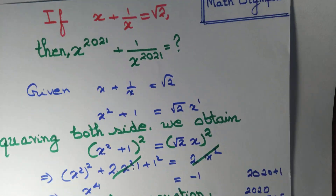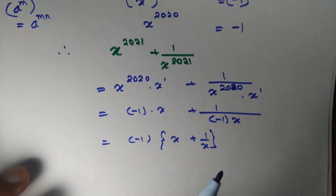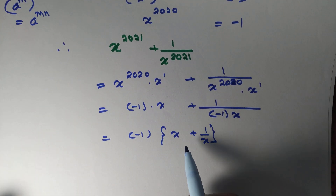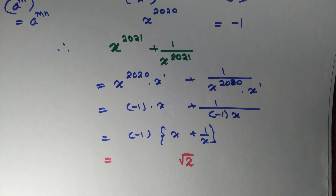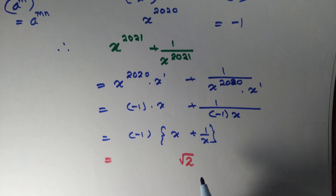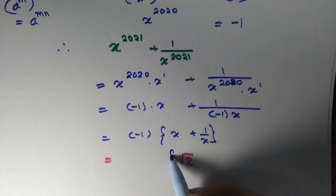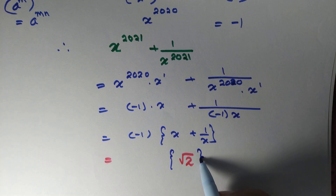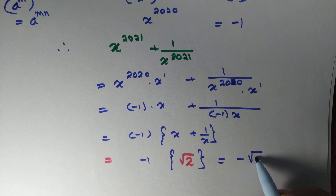We got it exactly equal to x plus 1 by x, and we are given that x plus 1 by x is simply equal to root 2. So the final answer is minus root 2, and we are done.